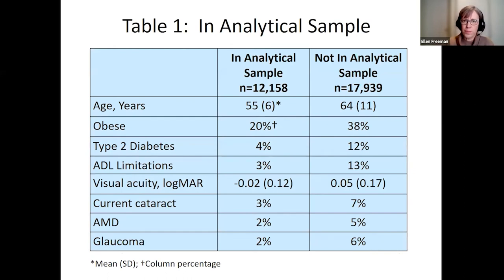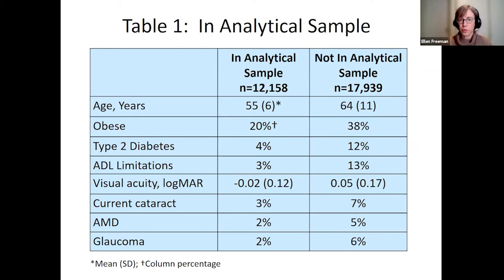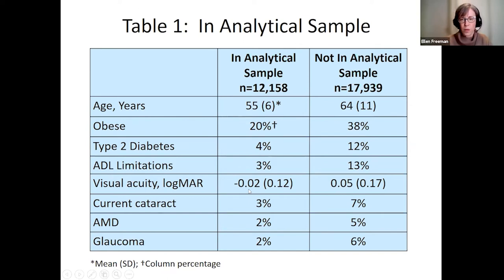Comparing the analytical sample to those excluded — either for failing the baseline balance test or not returning to follow-up — excluded individuals were older, more likely to be obese, had more health problems, somewhat worse visual acuity (higher logMAR), and were more likely to have eye diseases including cataract, AMD, and glaucoma.